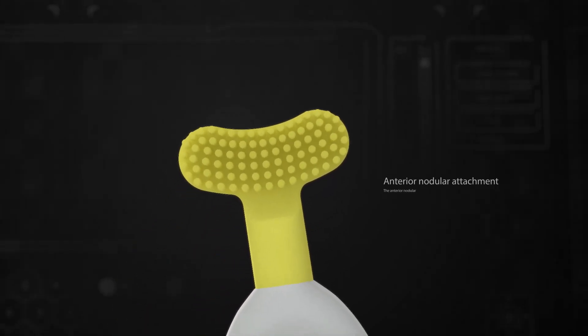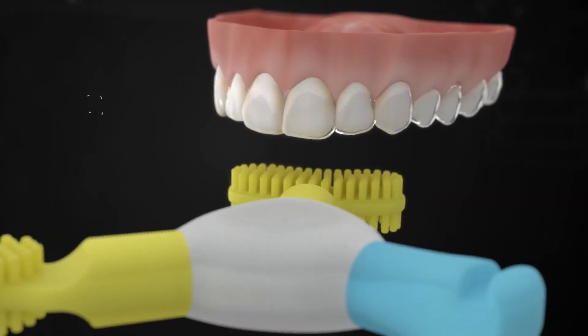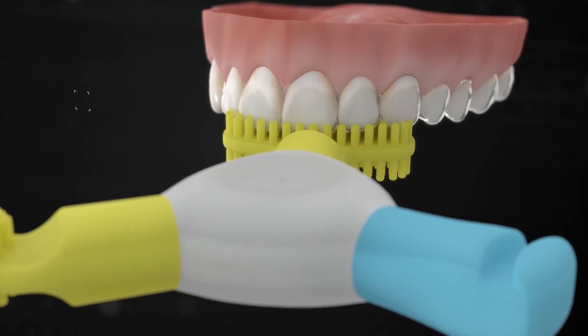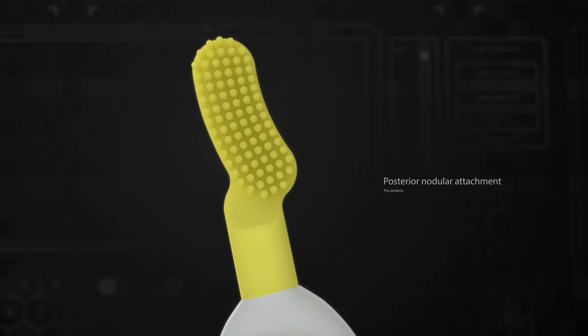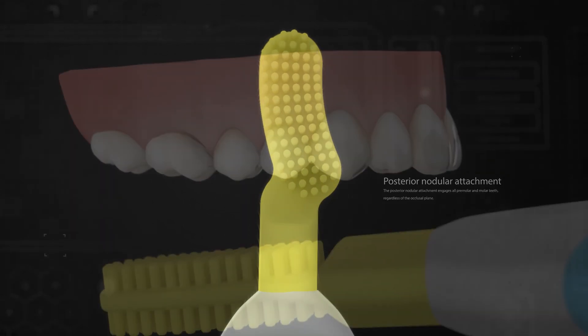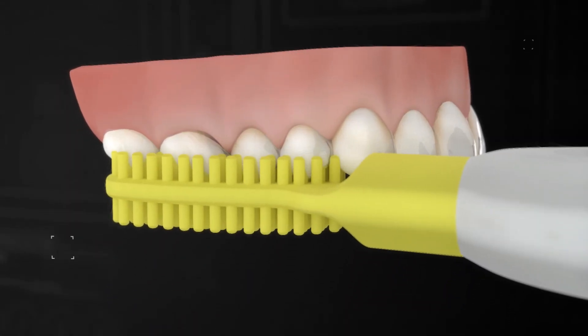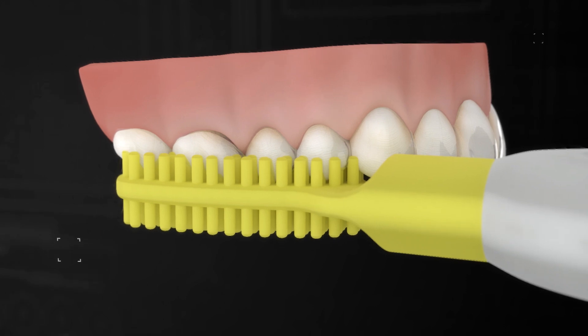The anterior nodular attachment engages all maxillary and mandibular anterior teeth. The posterior nodular attachment engages all premolar and molar teeth regardless of the occlusal plane.